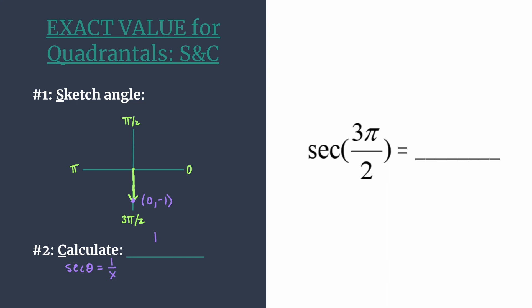As we try to calculate, x is 0, so we have 1/0, which of course doesn't work. That means it's undefined, so our exact value is undefined. If you're familiar with the secant graph, one interesting thing to notice: the graph of y = sec(x) will actually have a vertical asymptote at